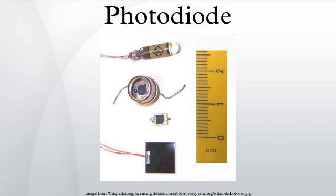Principle of operation: A photodiode is a PN junction or PIN structure. When a photon of sufficient energy strikes the diode, it creates an electron-hole pair. This mechanism is also known as the inner photoelectric effect.